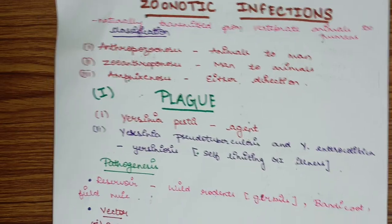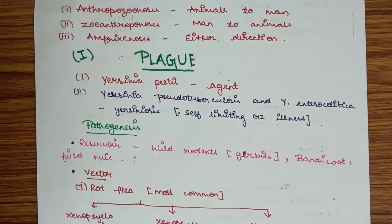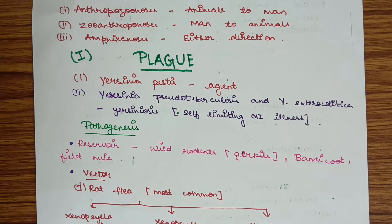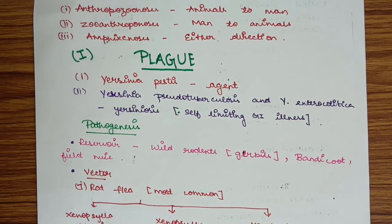First we will see about plague. Plague is caused by Yersinia pestis. Yersinia has two other species like tuberculosis, pseudotuberculosis and enterocolitica, which causes Yersiniosis, a self-limiting GI illness.